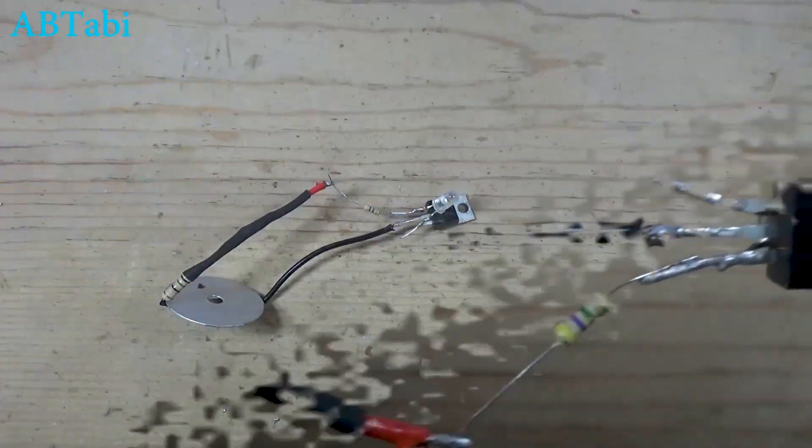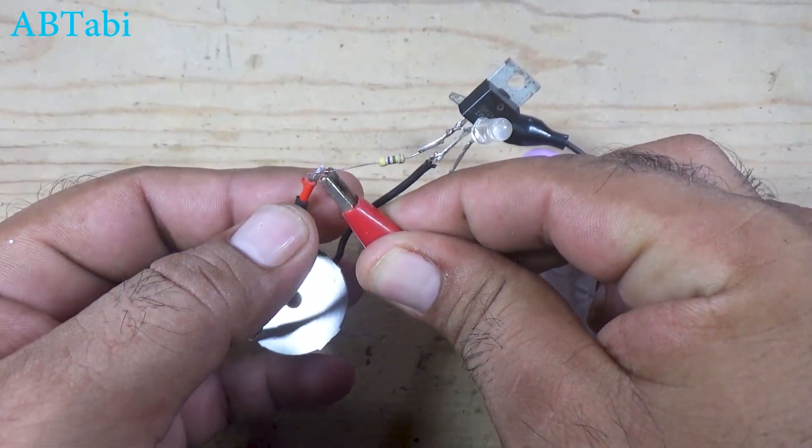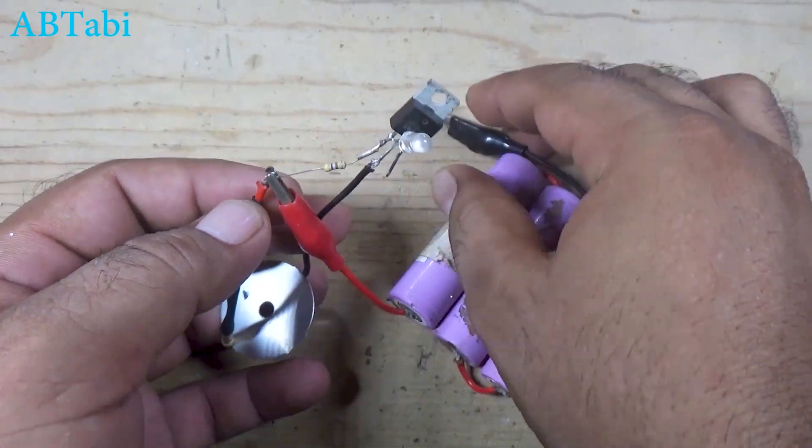After that, connect both resistors to the positive terminal of the 12 volt battery. Finally, connect the negative terminal of the battery to the source pin of the MOSFET.